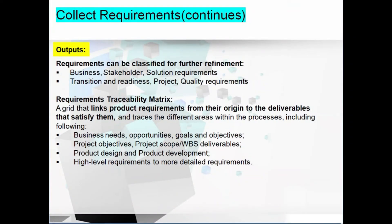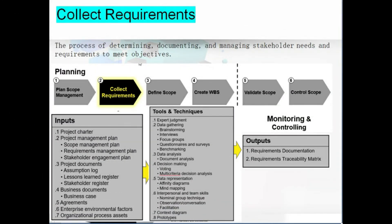The outputs of collect requirements are: requirements documentation and the requirements traceability matrix (RTM). Requirements documentation can contain various types of information, but must include acceptance criteria. The RTM — requirements traceability matrix — helps link requirements to objectives to ensure strategic goals are accomplished. We have now completed the second process in scope management — collect requirements — and will move to the next process, define scope.